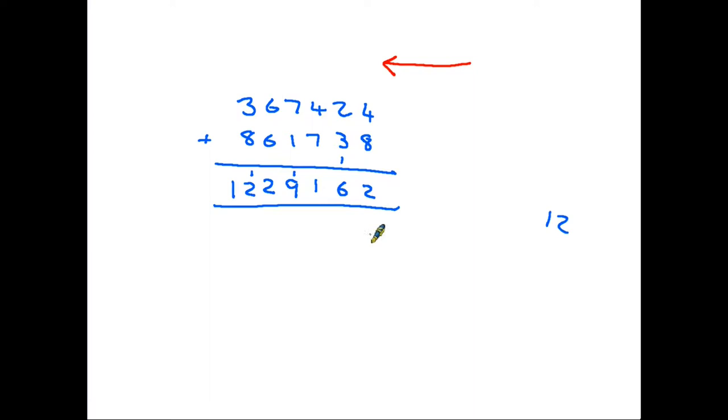That's rather a large number so what we would tend to do is start at this end and count 1, 2, 3, put in a comma, 1, 2, 3, put in a comma and we have 1,229,162. If you're not sure how we did that, have a look at my video on handling large numbers.